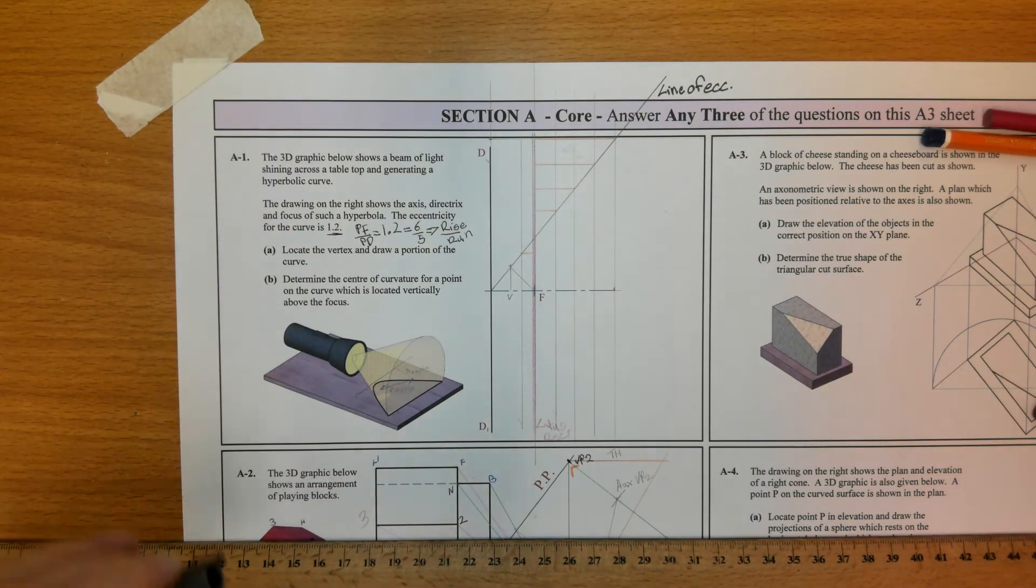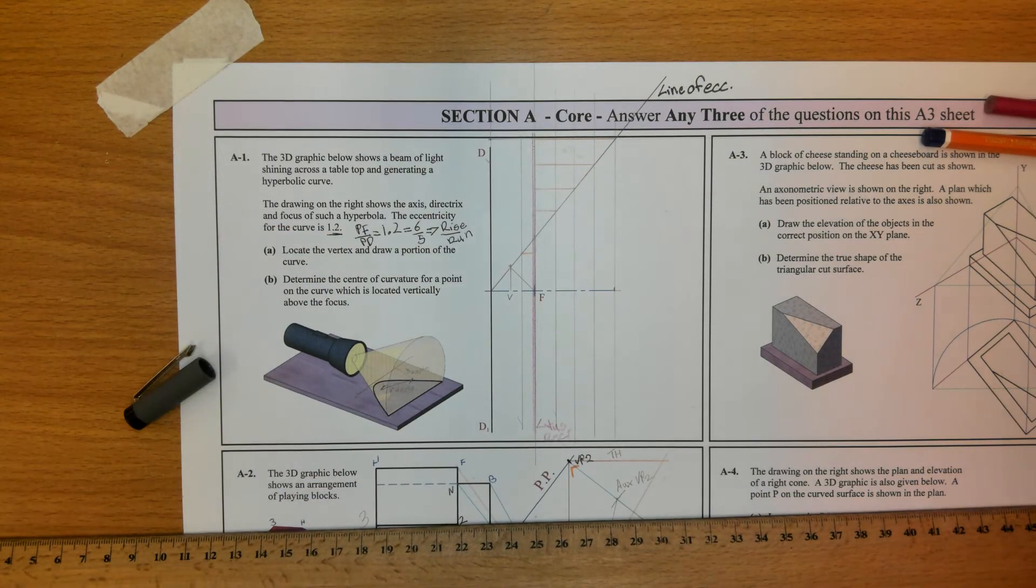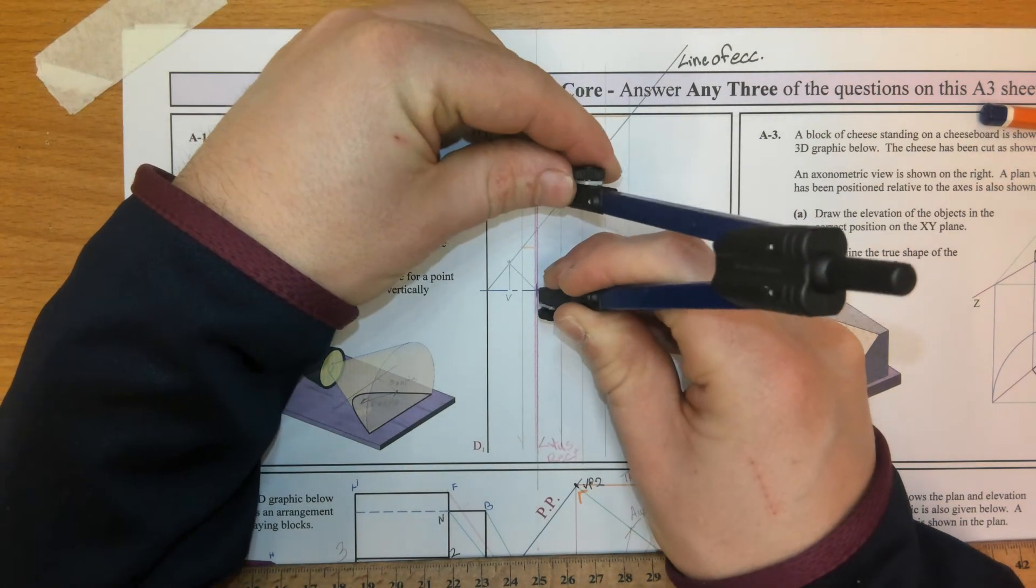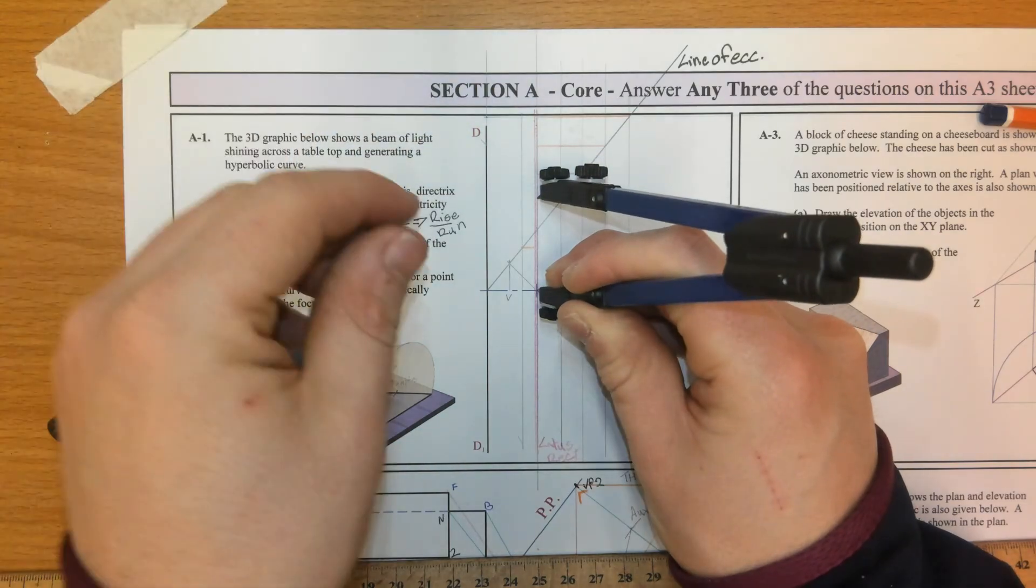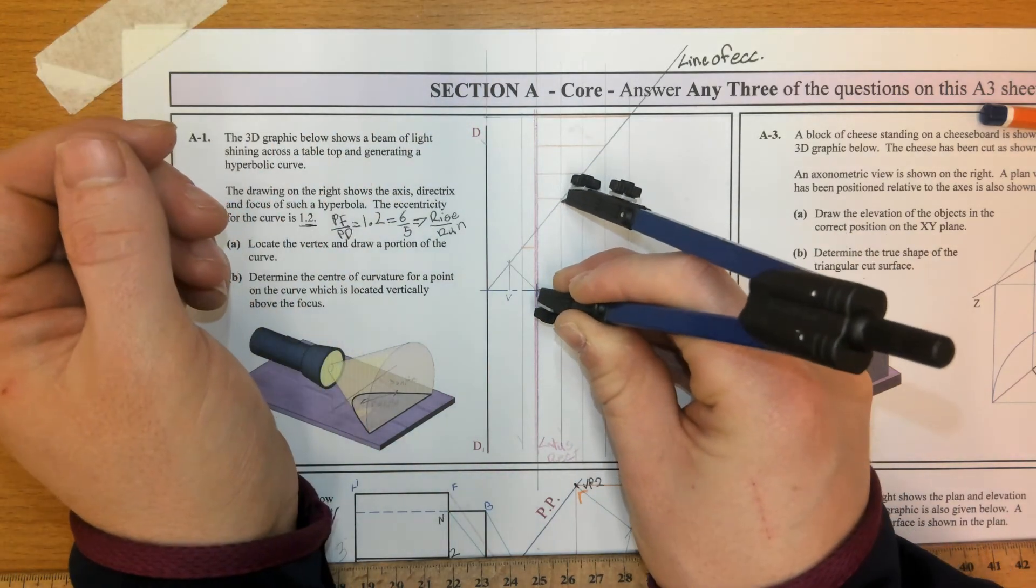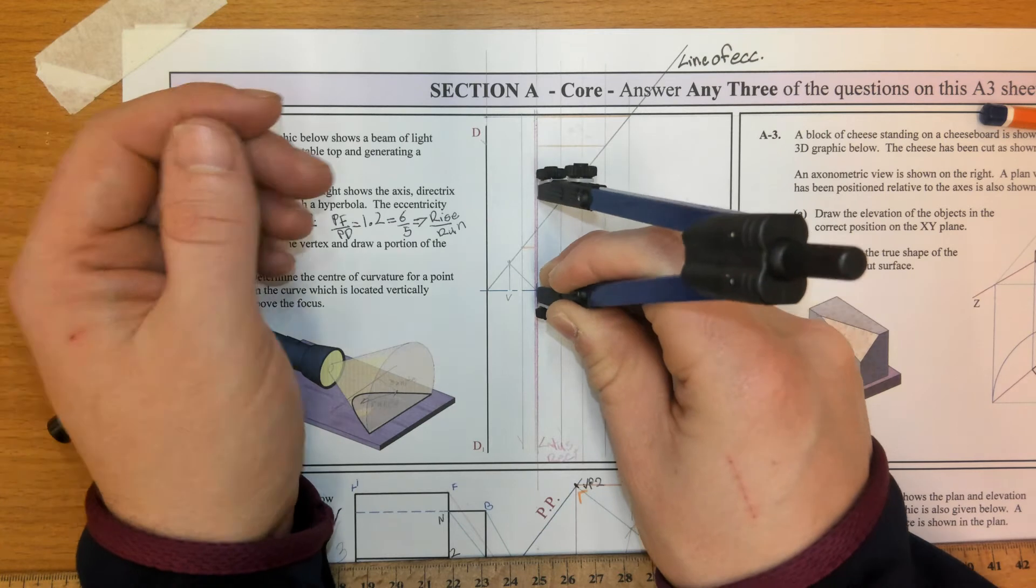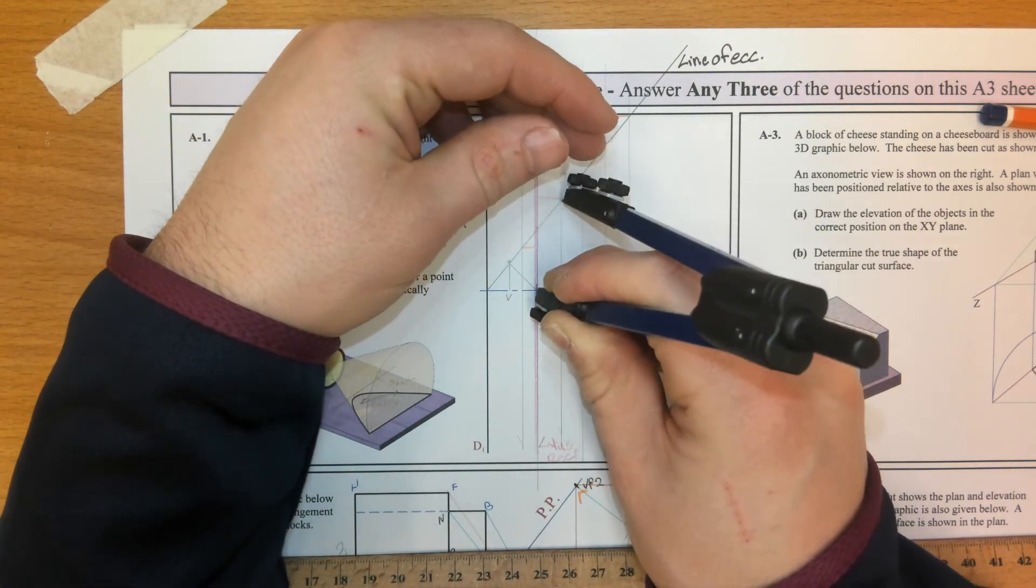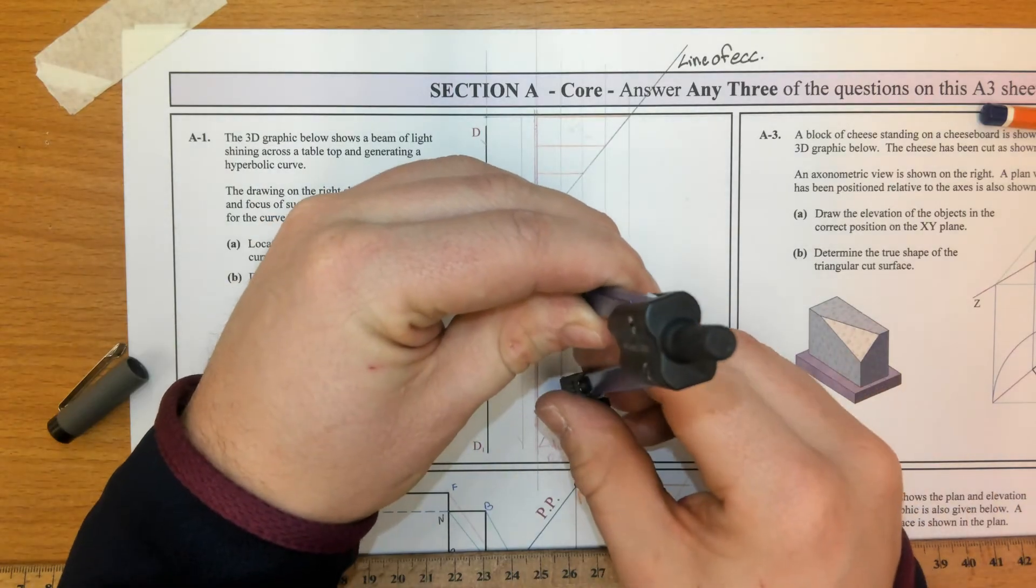Now, from that point, we're going to take our compass and put our compass on F and bring the nib to where the orange meets the pink and we're going to swing it to the line that it originated from. Top and bottom.